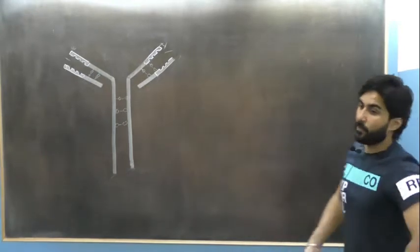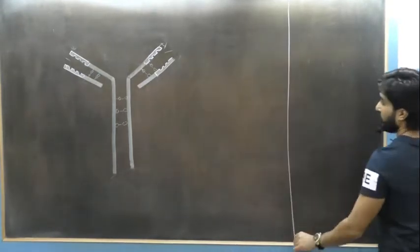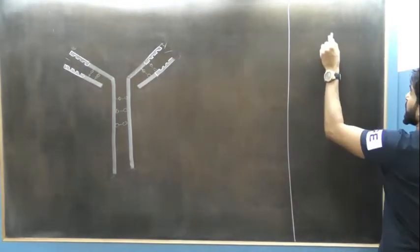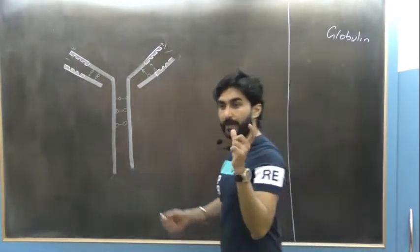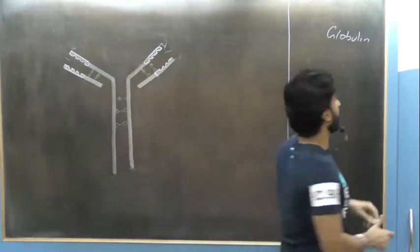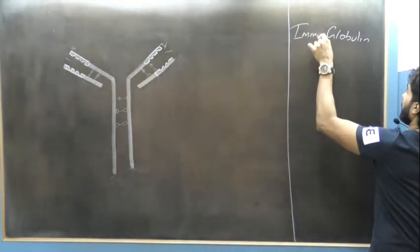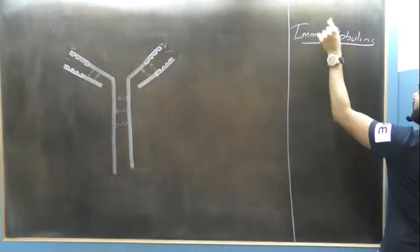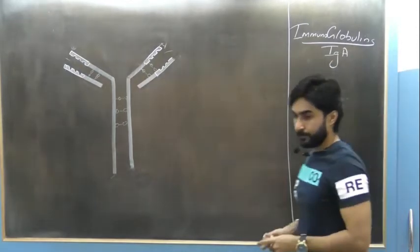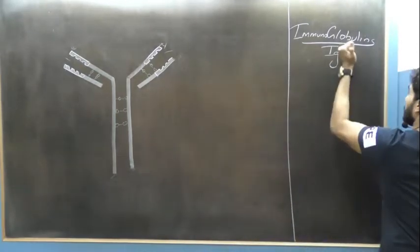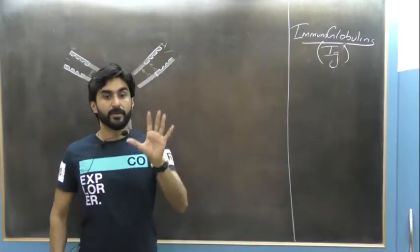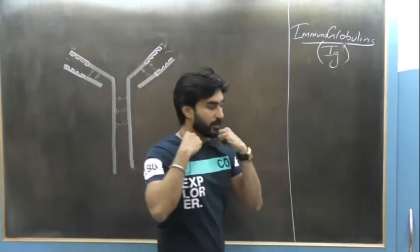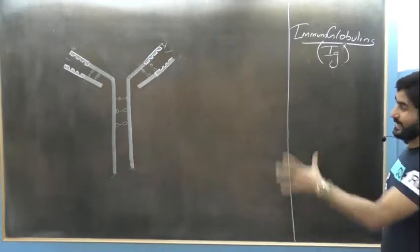Each antibody molecule is chemically a protein belonging to a category called globulin. Since it is found within our immune system, antibodies are better known as immunoglobulins. The short form used for antibodies is Ig, which stands for immunoglobulin. Chemically, these immunoglobulins are protein molecules.